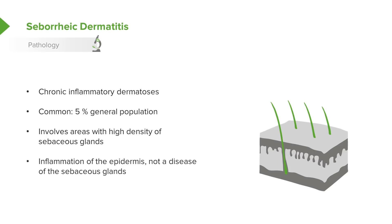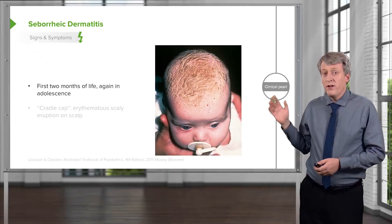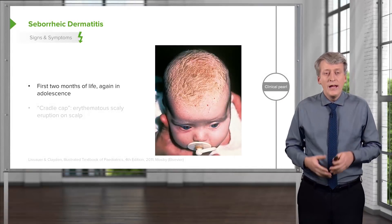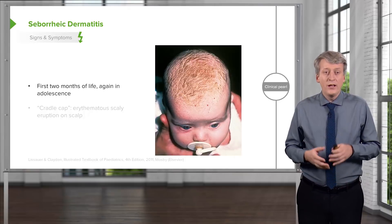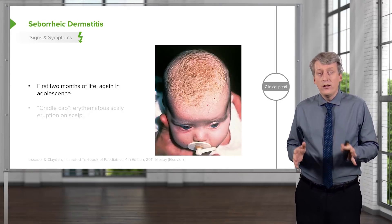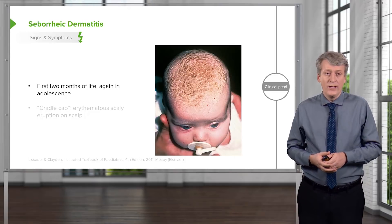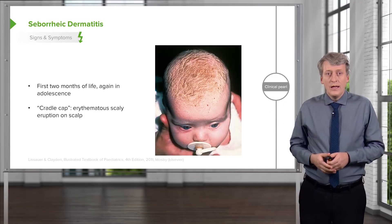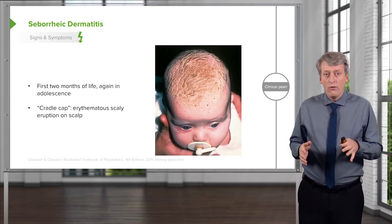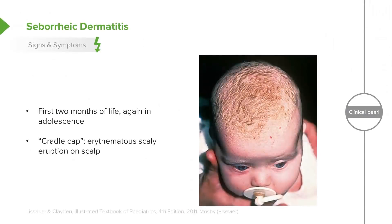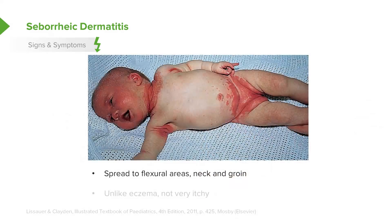It causes inflammation of the epidermis and it's not a disease of the sebaceous glands themselves. Here is a very classic case of cradle cap. It's remarkably common and it occurs in the first two months of life and then again during adolescence. Cradle cap is an erythematous scaly eruption found on the scalp, probably bothering the parents more than the child. Later, it can spread to flexural areas like under the neck, in the groin, or under the armpits.